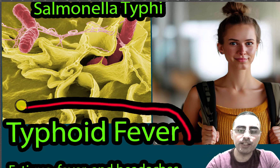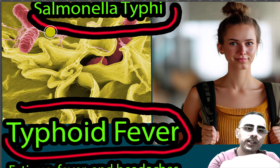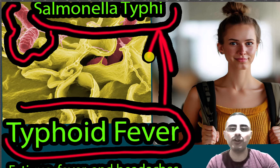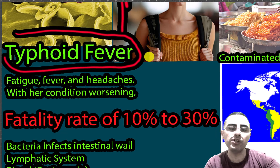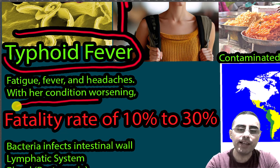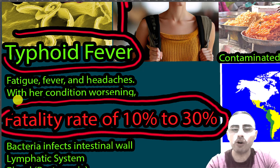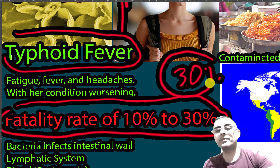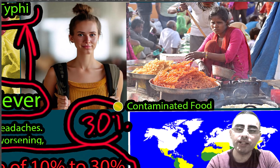Typhoid fever is an infectious disease caused by Salmonella typhi bacteria, which lives inside human cells. It is important because it has a huge fatality rate — if left untreated, it causes death in 10 to 30 percent of cases. A 30 percent death rate is huge for any disease.